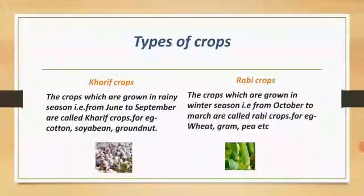Now we will discuss Rabi crops. The crops which are grown in winter season, that is from October to March, are called Rabi crops. For example, wheat, gram, pea, etc. In this picture, you can see a pea crop which is an example of Rabi crops.